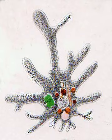Lobosa is a taxonomic group of amoebae possessing broad, bluntly rounded pseudopods. In current classification schemes, it is a subphylum of Amoebozoa, composed of amoebae that have lobose pseudopods but lack cilia or flagella.